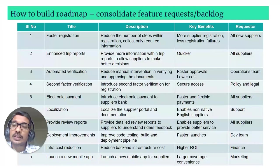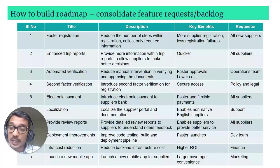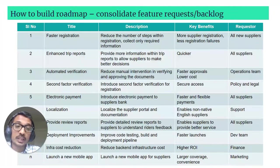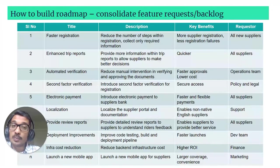You then jot down all these requests in an Excel, Word document, or any other tool. For each request, you have a small description of what is needed, the benefit of why it is needed, and details on who requested it and who it is impacting. In this example of the supplier-side portal, requests come from suppliers, internal teams like operations, and the development team — from faster registrations all the way to launching a new mobile app. You keep these in a state where you can review and stack rank them as needed.